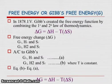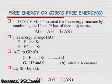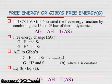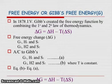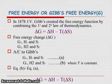Free energy or Gibbs free energy. In 1878, Gibbs created the free energy functions by combining the first and second law of thermodynamics. ΔG equals ΔH minus TΔS. Free energy change ΔG with G1, H1, S1, G2, H2, and S2. According to Gibbs, where T is constant, equations B and equations A gives ΔG equals ΔH minus TΔS.